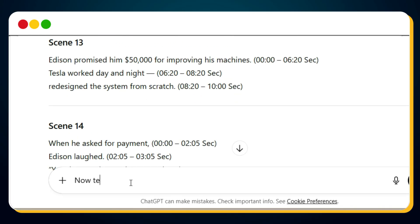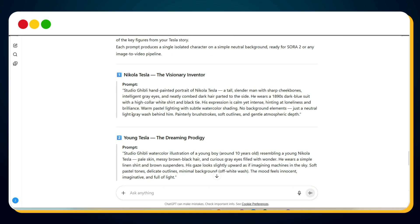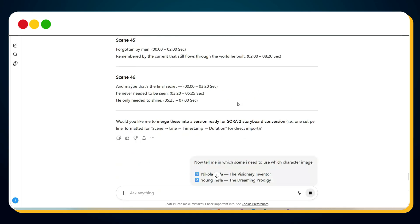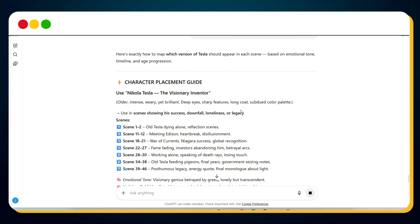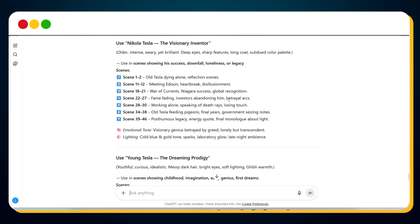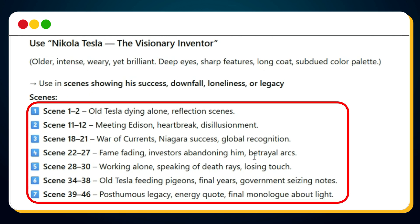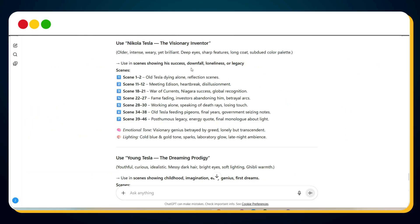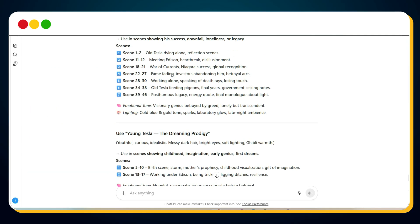Go back to your timestamped script chat and type this prompt. Now tell me in which scene I need to use which character image. Then paste the references for both characters, Young Tesla and Adult Tesla. ChatGPT will instantly map which character belongs to which scenes. For example, you'll see something like Scene 1-2, 11-12 equals Adult Tesla, and Scene 3-10 equals Young Tesla. Now that we know the exact character placement, it's time to generate our 2D animation video clips.